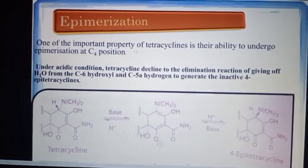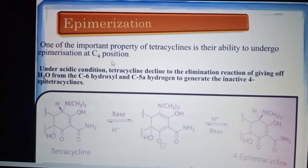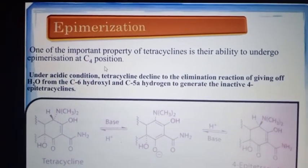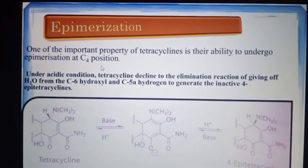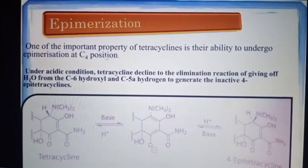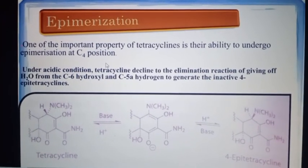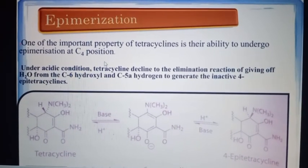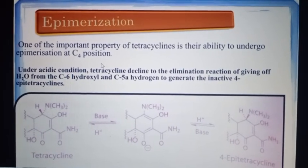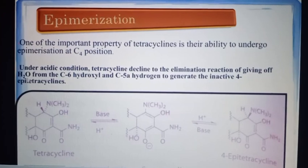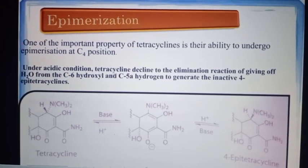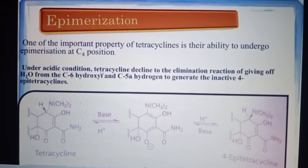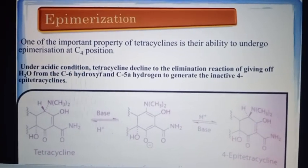One of the most important properties of tetracycline is its ability to undergo epimerization at the C4 position. Remember, keto-enol tautomerism occurs at the C3 position (C2 to C3), whereas epimerization occurs at the C4 carbon. Tetracycline also has amphoteric nature.